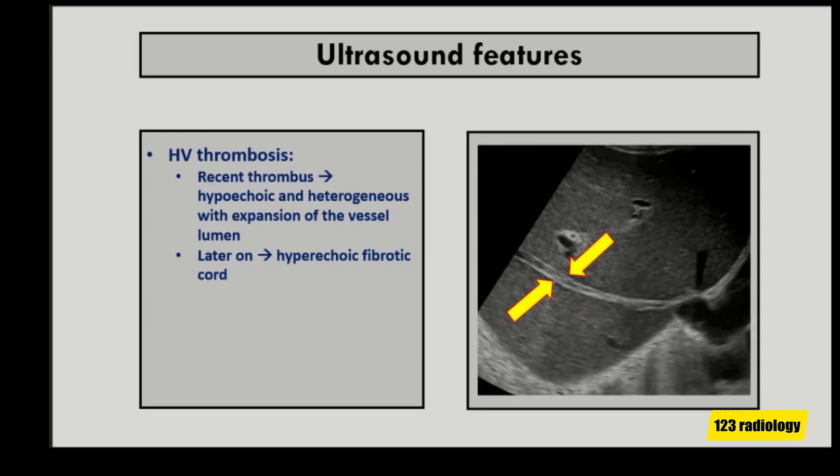In the chronic stage, the thrombosed hepatic vein results in formation of a hyperechoic fibrotic cord, as seen in this image.